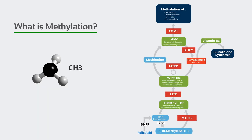Methylation is a biochemical process that occurs in every human cell. It involves the donation of active methyl groups to other molecules. The structure of methyl groups consists of a carbon atom bonded to three hydrogen atoms, CH3. Methyl groups are very basic molecules, but they serve crucial roles and have a significant influence on cellular function.